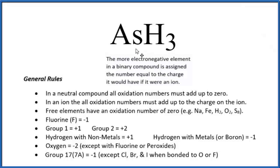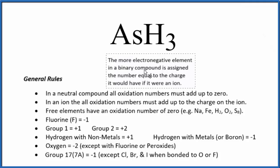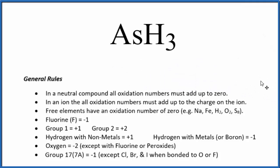The charge for arsenic, which is right below phosphorus on the periodic table, would be three minus. So we consider arsenic to have an oxidation number of minus three, and then each one of these hydrogens would be plus one. Three times plus one is three plus, and we have our minus three, so these are the oxidation numbers for ASH3.